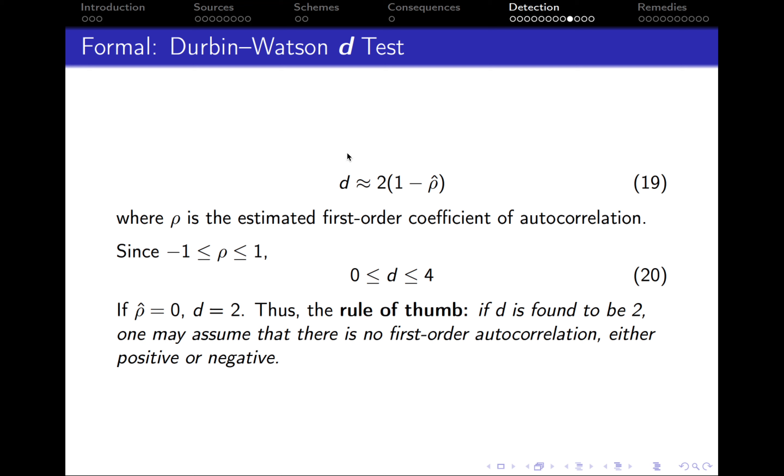So, which means that if D is found to be 2, so if Durbin-Watson is equal to 2, one may assume that there is no first order autocorrelation, either positive or negative. So whenever you get the result of the D statistic that is close to 2, very, very close or equal to 2, then you can conclude that there is no autocorrelation or no first order autocorrelation.